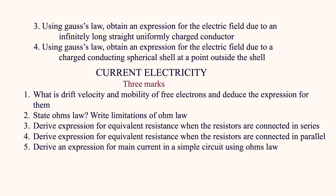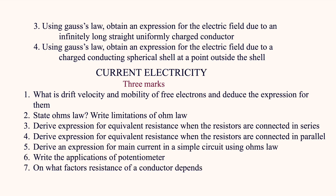Derive an expression for main current in a simple circuit: I = E / (r + R), where r is internal resistance and R is external resistance. Write the applications of the potentiometer, and on what factors does the resistance of a conductor depend. Also state Kirchhoff's rules in an electrical network. These are the three-marks questions from Current Electricity.